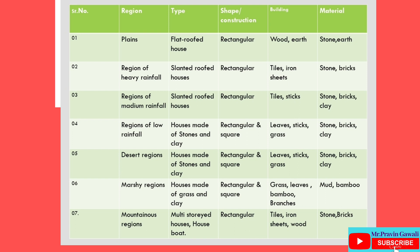Second region: Region of heavy rainfall. Type: slanted roof houses. Construction: rectangular. Building material: tiles, iron sheets, stone and bricks.